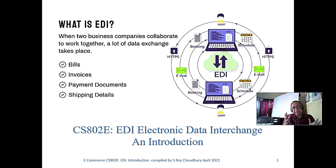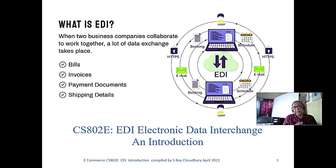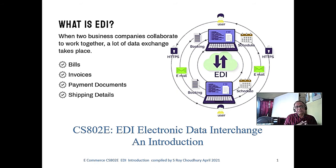The Ethernet protocol, Aloha network — you remember the networking class in the 70s — then came the packet switch network all over USA and Europe. They basically used the X.25 protocol, 64 Kbps X.25 protocol. At that time, graphics were not transferred.